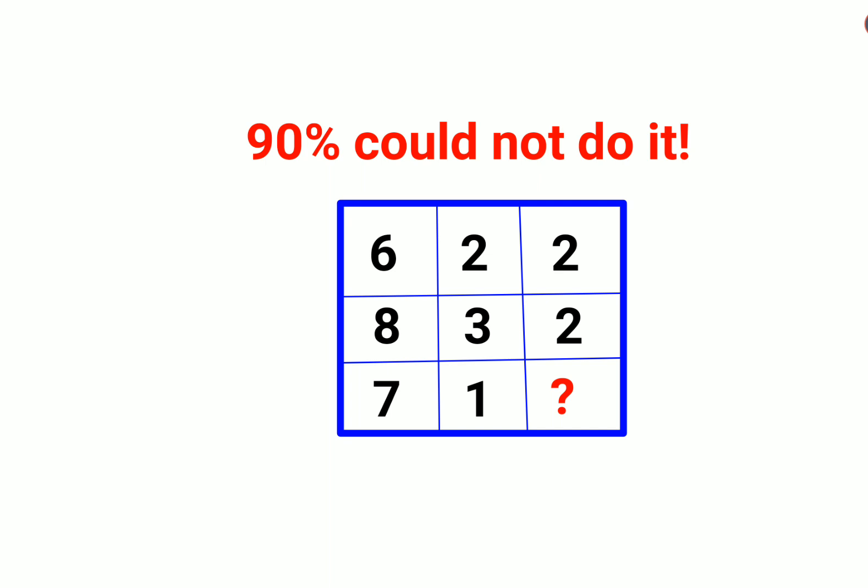So we have 6 plus 2 plus 2 that gets you to 10. Here we have 8 plus 3 plus 2 that gets you 13. So this is definitely not working, there is not a common total.